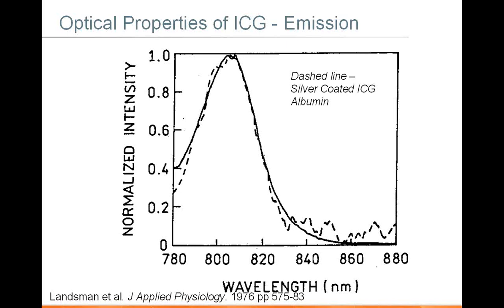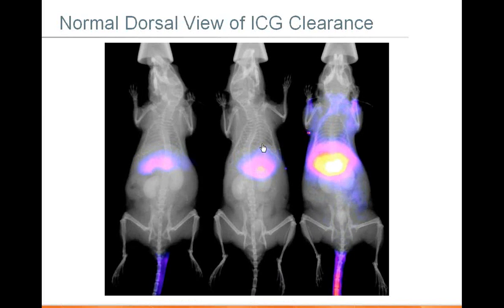The emissions are also nicely situated in the near-infrared, with the peak around 810 nanometers, continuing to trail off far out into the near-infrared. If you inject ICG into an animal, it rapidly clears from the bloodstream into the liver and from the liver into the excretory pathway. You can see this from three mice that were IV-injected with ICG and then placed into an in vivo MSFX Pro with the distribution tracked over time.